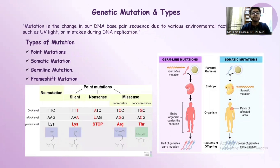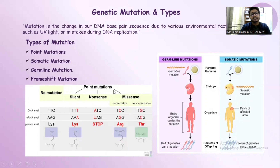Point mutation has three subtypes. In the picture, there are four items shown — three types belong to point mutation, and another one is for comparison with a no-mutation type of gene.